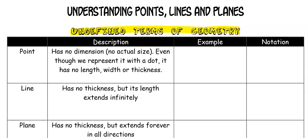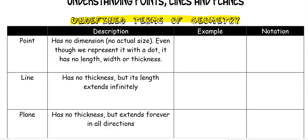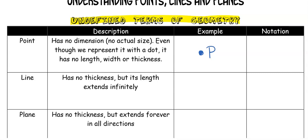Our first undefined term is a point. What's important about a point is that it has no dimension — it actually has no size, which is weird to think about. When we draw it we draw a dot, and let's say we call this point P. Even though we draw it with a dot, it actually doesn't have any size to it whatsoever.